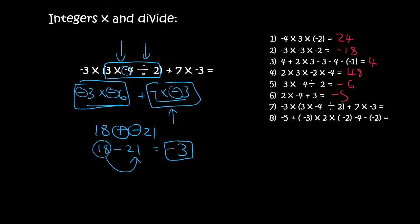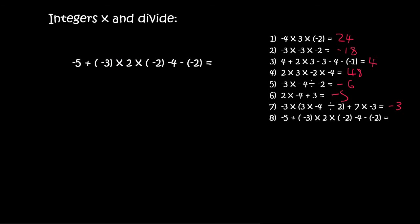And the last one. If we look at this, we can see that these 3 here are all timesed together, so we'll do that first. That's going to be 3 times 2, which is 6. 6 times 2 is 12. Then there is a negative and a negative. Two negatives make a positive, so that will be 12. Everything else, I'm going to write it as it is.